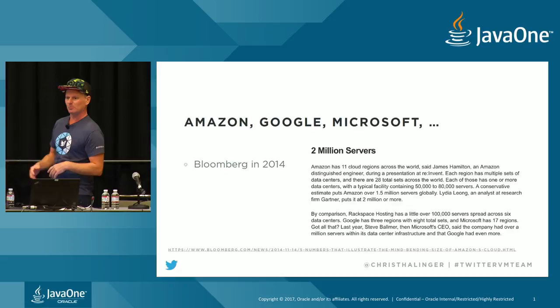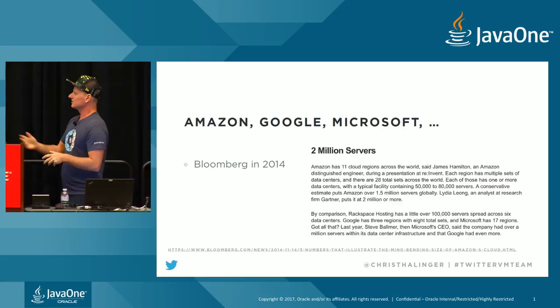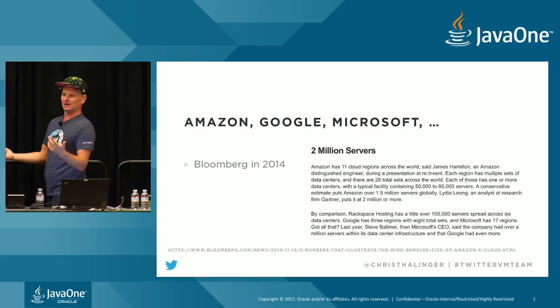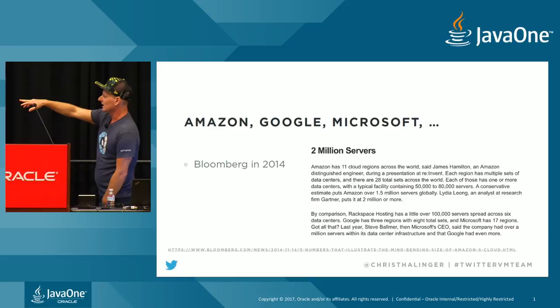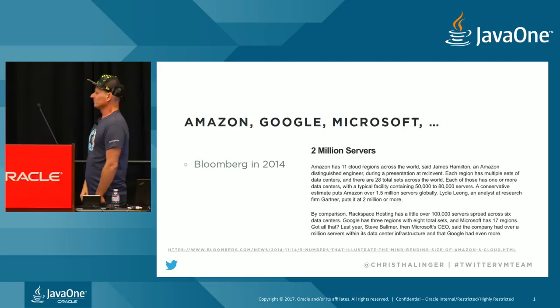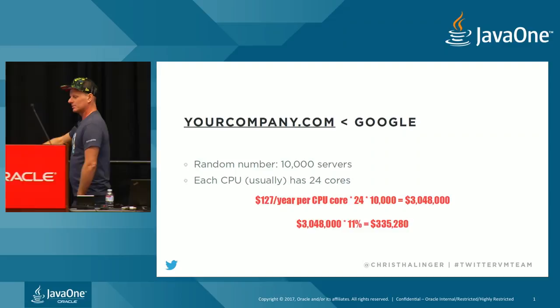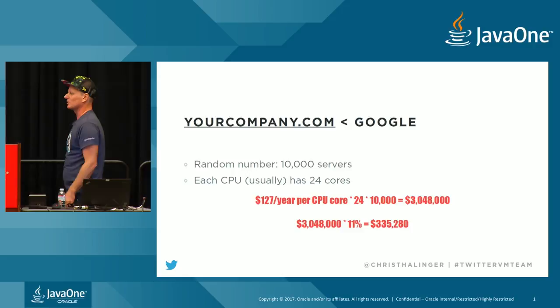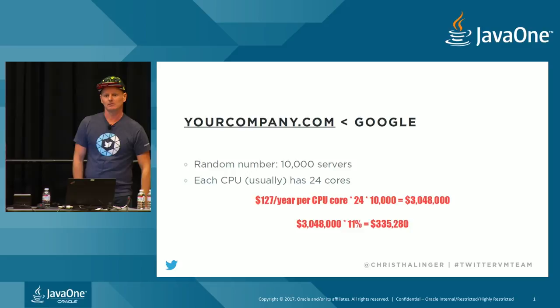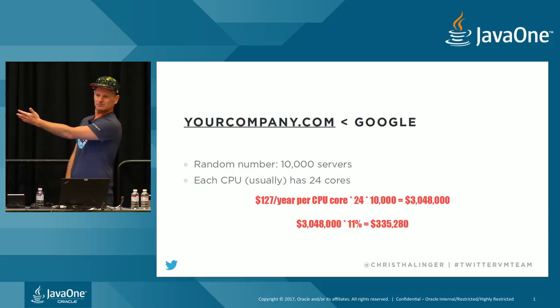There was an article from 2014 talking about 2 million servers in some data centers — 50 to 80,000 servers, maybe 24 cores each. I don't know how big Twitter actually is, but let's pick a random number of 10,000 servers. Each has usually 24 cores — multiply that out, $3 million per year just to run your infrastructure. You can save 11% of that — that's more than a salary here in the Bay Area. You can hire one more person.